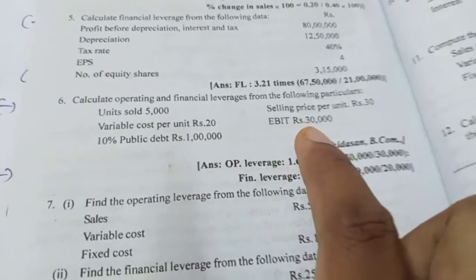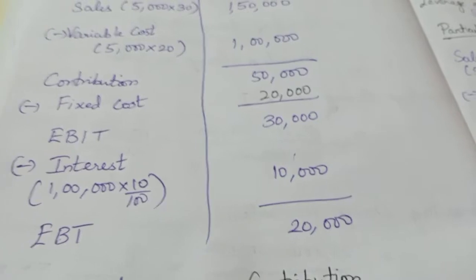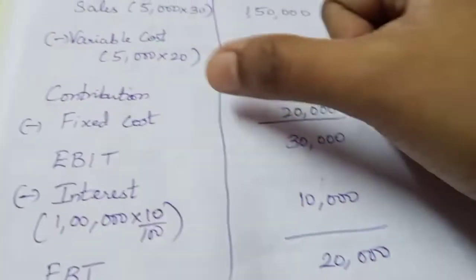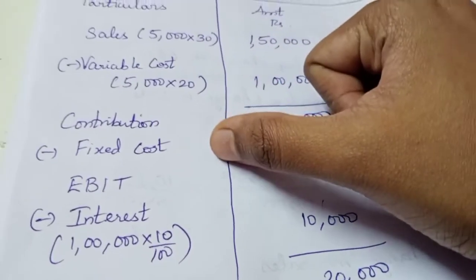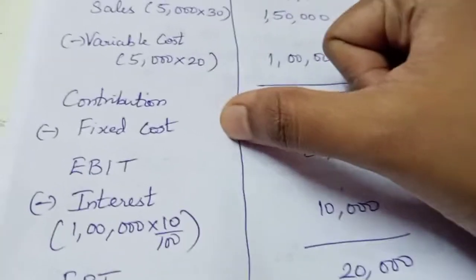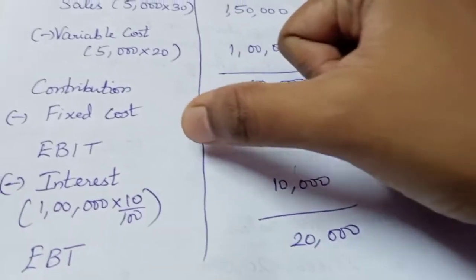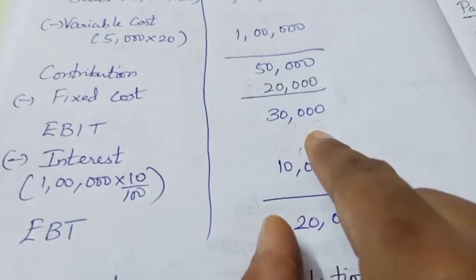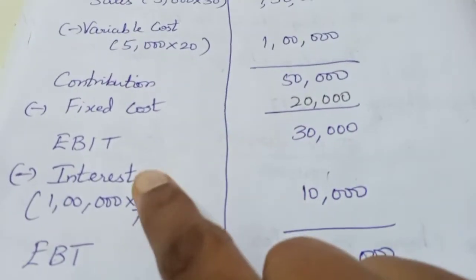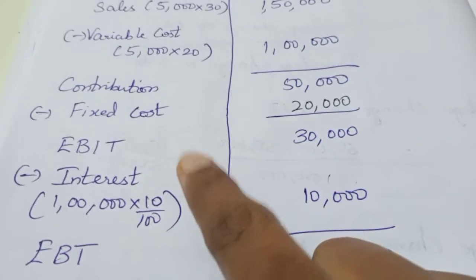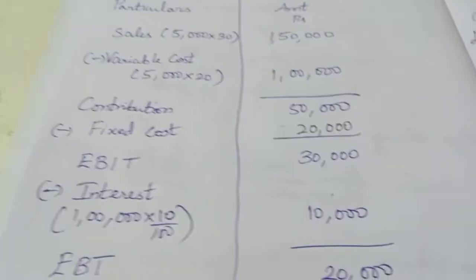Now we determine Fixed Cost. EBIT is given as 30,000 in the problem.